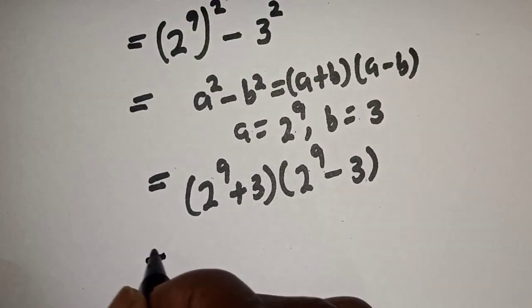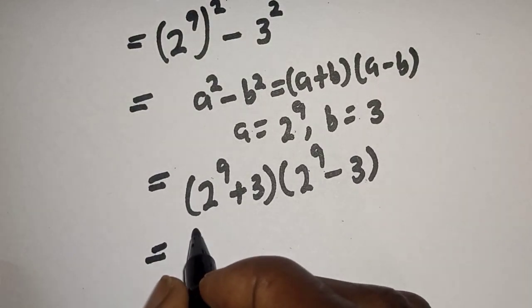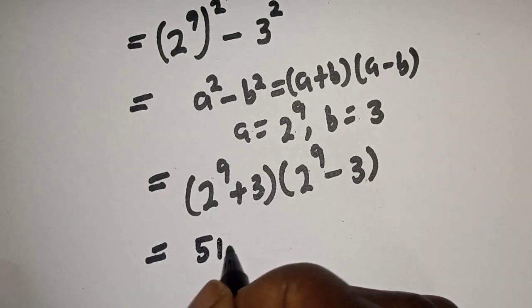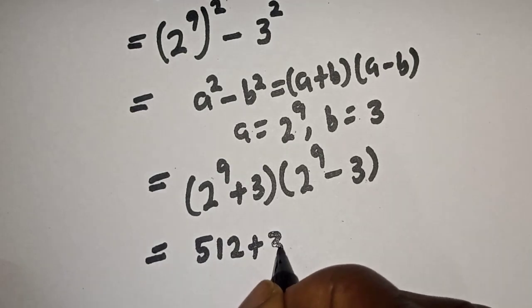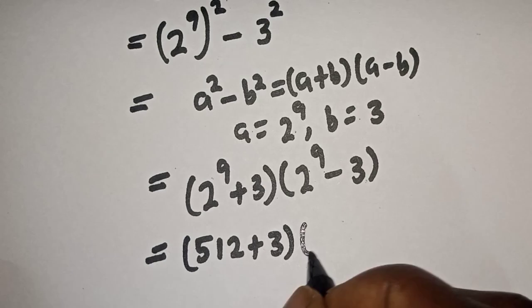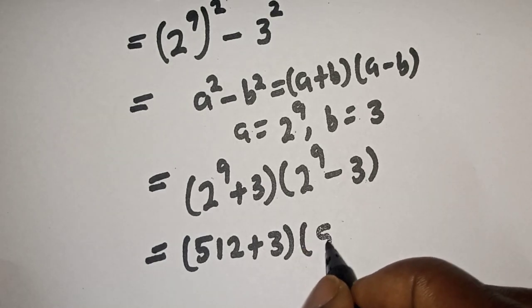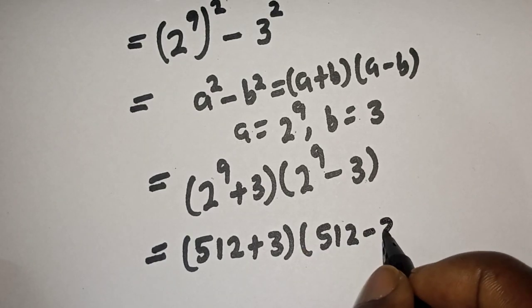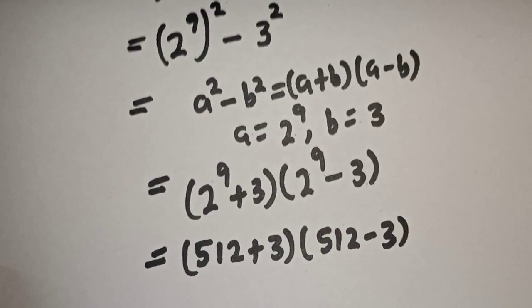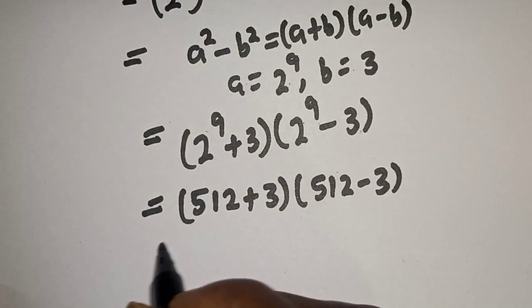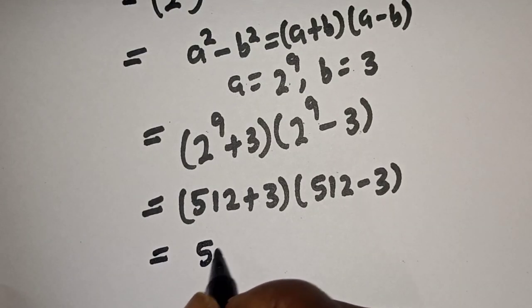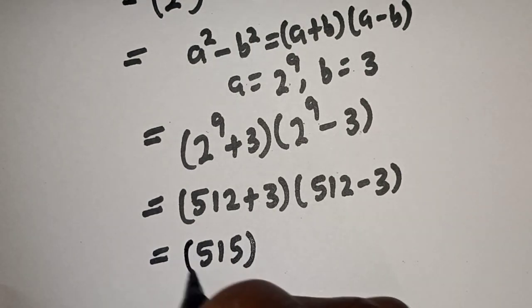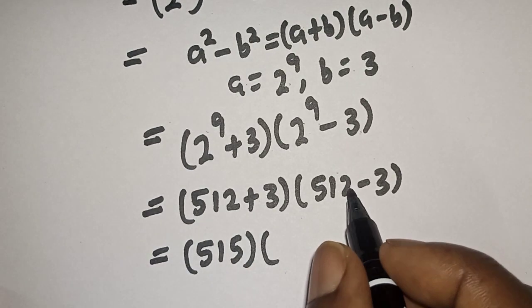And this is equal to 2 raised to power 9 is 512 plus 3 bracket 512 minus 3. Then 512 plus 3, this is 515 bracket 512 minus 3, this is 509.